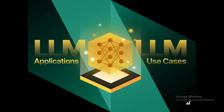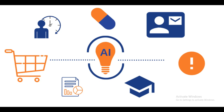Applications and use cases. IoT technology finds applications across various industries and sectors, including smart homes, healthcare, agriculture, transportation, manufacturing, and environmental monitoring. Examples include smart cities with connected infrastructure, remote patient monitoring in healthcare, precision agriculture with IoT-enabled sensors, and predictive maintenance in industrial settings.